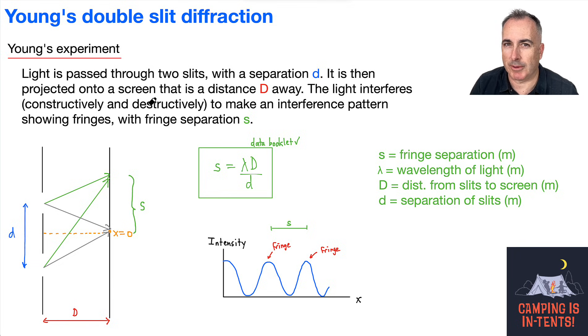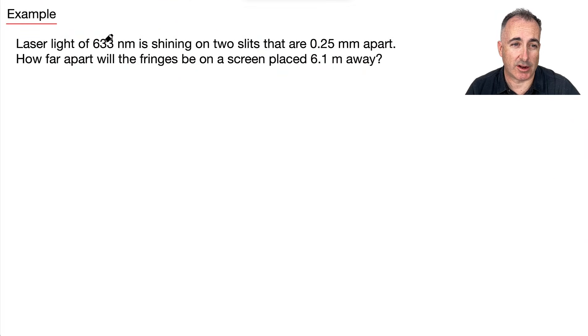So let's do an example. We have laser light of 633 nanometers. Now, what does that mean? That is the wavelength of the light. Don't forget what a nanometer is. That's 10 to the power of minus 9. Remember, you can look that up in your data booklet if you need to. It's shining on two slits that are 0.25 millimeters apart. Don't forget millimeters. Those are times 10 to the minus 3. And what letter is this right here? These two slits, this is the separation of the slits. This is lowercase d here. That's what this is. This one here was lambda.